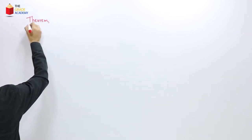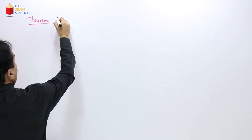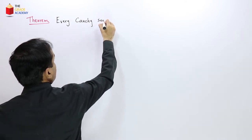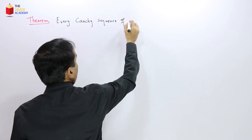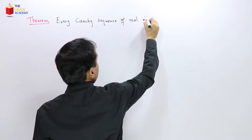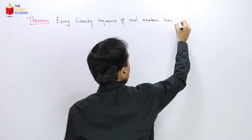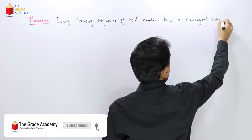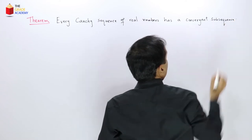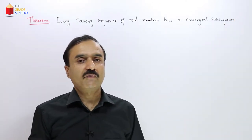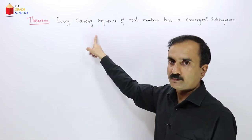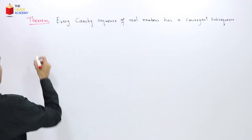We are going to prove the theorem that every Cauchy sequence of real numbers has a convergent subsequence. This follows from the Bolzano-Weierstrass theorem. Now let us prove this theorem.